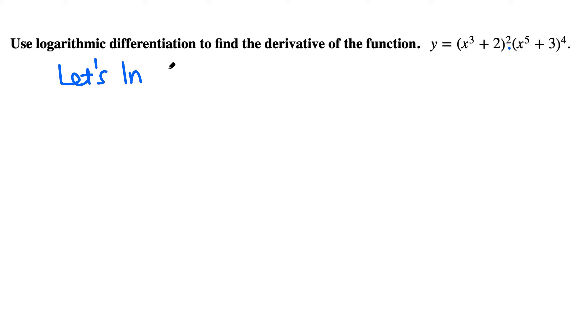Let's take ln on both sides. That makes ln y equals ln of the whole thing: (x³ + 2)² times (x⁵ + 3)⁴. ln of everything, so let me put another parenthesis here.